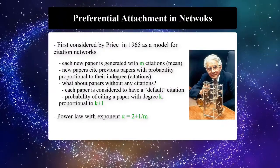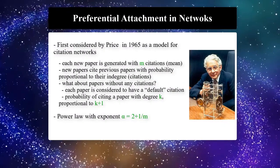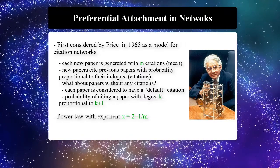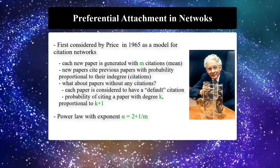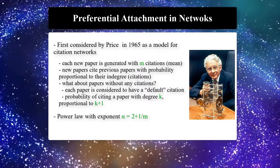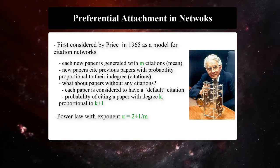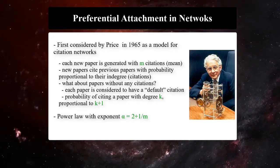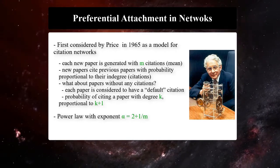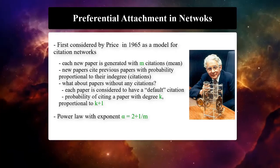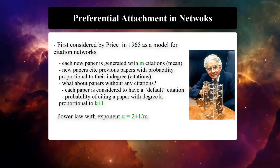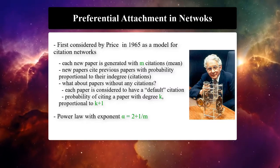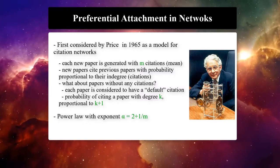This question was first considered by Price in 1965 as a model for citation networks. Each new paper is generated with m citations, and new papers cite previous papers with probability proportional to their in-degree. Each paper is considered to have a default citation, and the probability of citing a paper with degree k is proportional to k plus 1. The degree distribution of the citation network is a power law with exponent alpha equals 2 plus 1 over m.